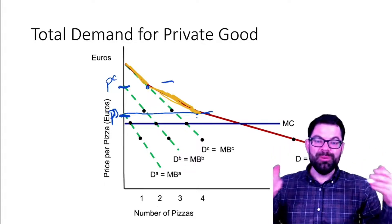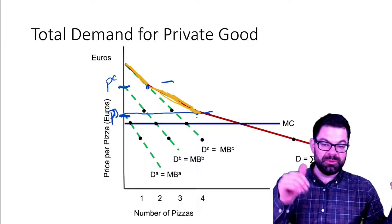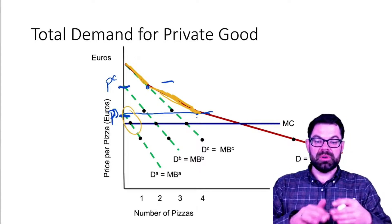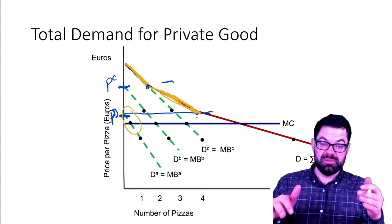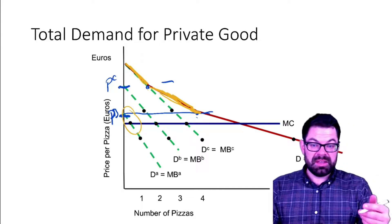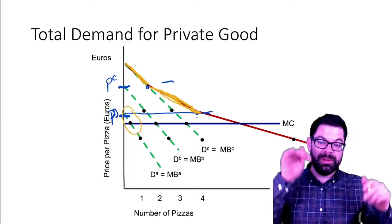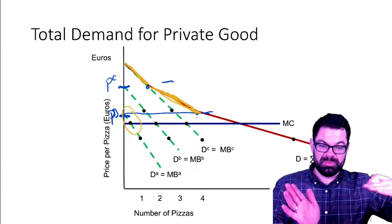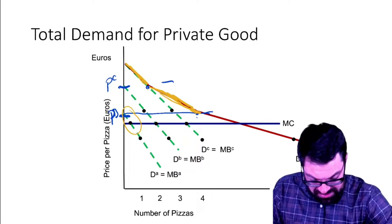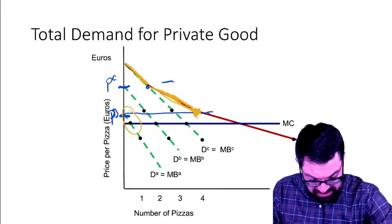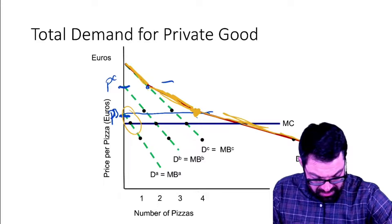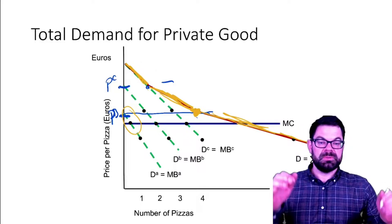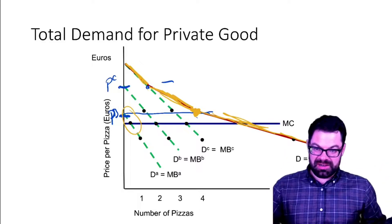Below PB, it is actually all three people who will consume pizza, because even person A who has a low willingness to pay is going to consume pizzas. The market demand for pizzas below PB is all three demand curves added up horizontally, giving us yet another kink point and then the final piece of the demand curve. That's how we get a market demand curve.